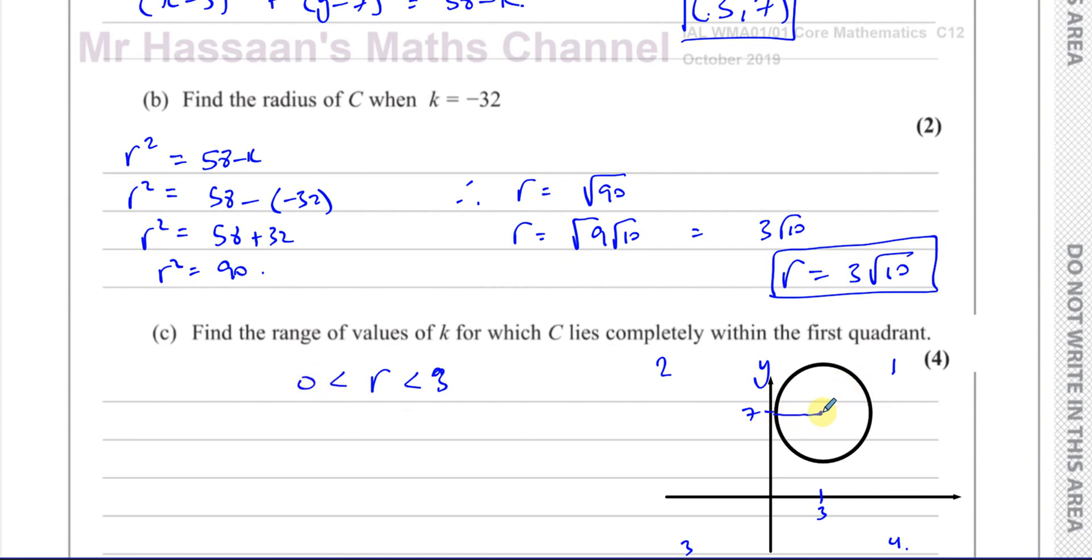It has to be completely within the first quadrant, and we know the radius must be greater than 0. For sure, the radius can't be less than 0, it doesn't make sense. So the radius must be between 0 and 3. Therefore r² must be between 0 and 9, and we know the radius is always positive, so we don't have issues with squaring. We know that r² from our original equation is 58 - k. That's r².